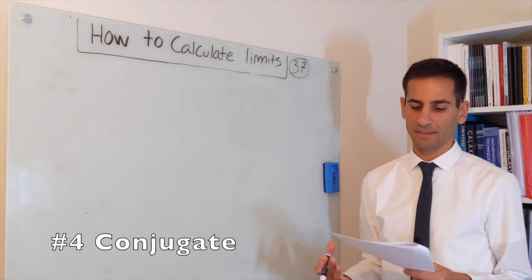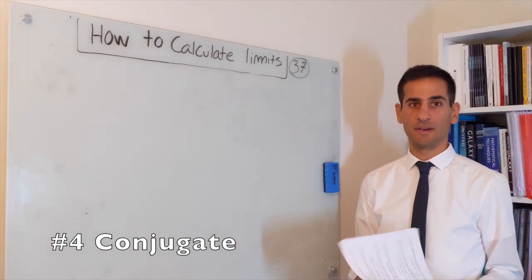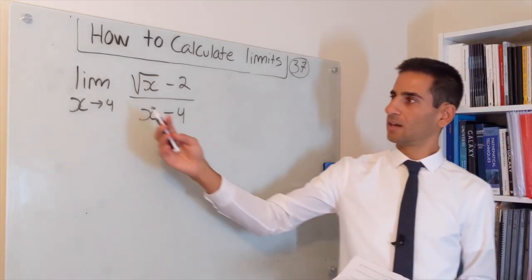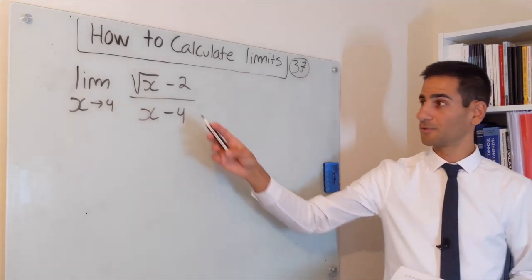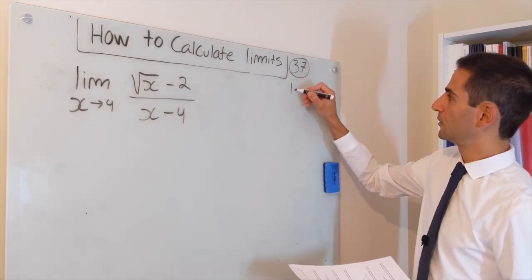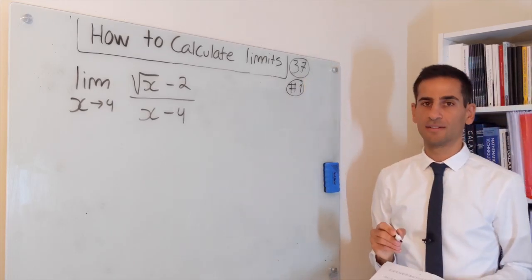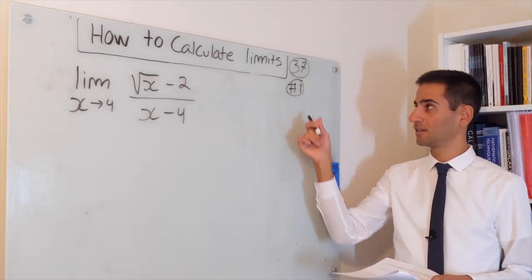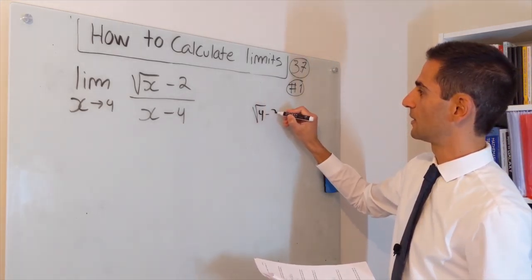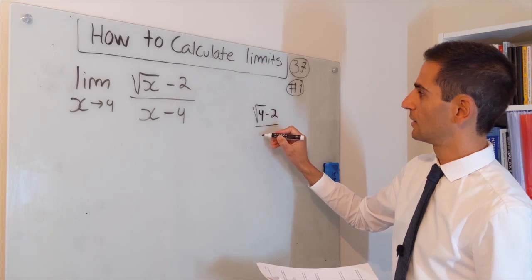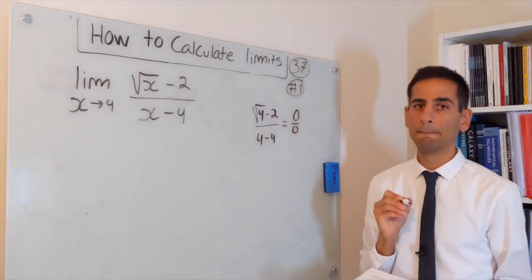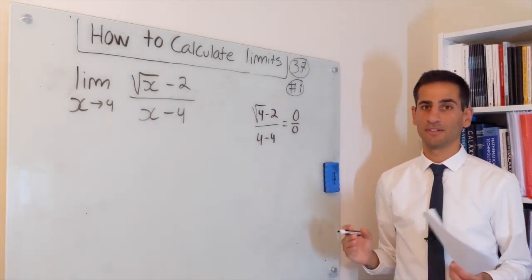Let's try something else. We want to investigate this limit: the limit when x goes to 4 of square root of x minus 2, over x minus 4. If you go to the easiest method first — substituting in — you get square root of 4 minus 2 over 4 minus 4, and you end up with a problem because you get 0 over 0, which is undefined.